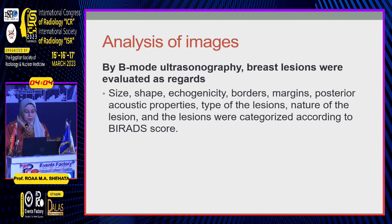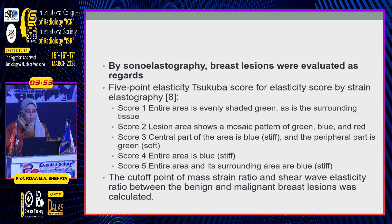Image analysis by ultrasonography assessed size, shape, echogenicity, borders, margins, posterior acoustic properties, type and nature of the lesion, and finally the BIRADS score. By sonoelastography, we evaluated the lesion according to the five-point elasticity scoring system, and the cutoff point of mass strain ratio and shear wave elasticity ratio between benign and malignant lesions was calculated.